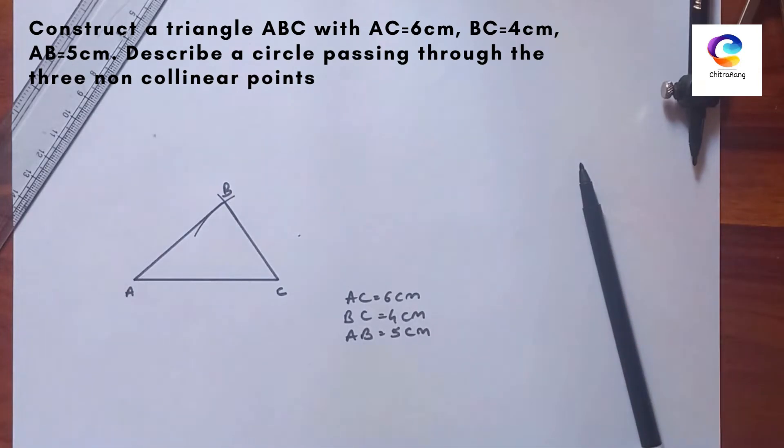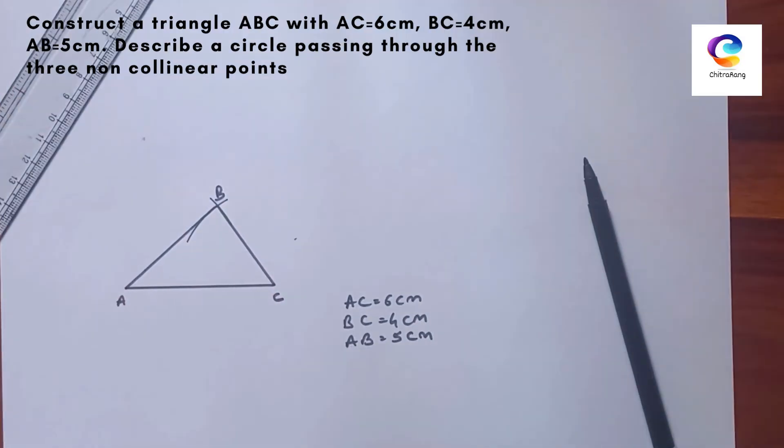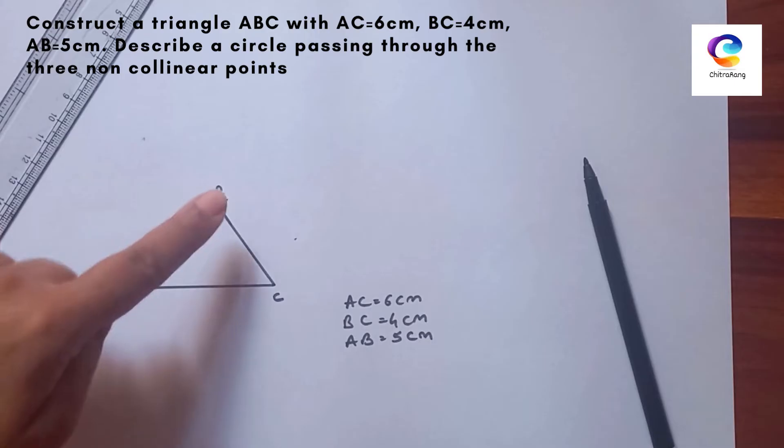Now, next step: we have to draw a circle using these three points. In this case, we will bisect AC and AB.